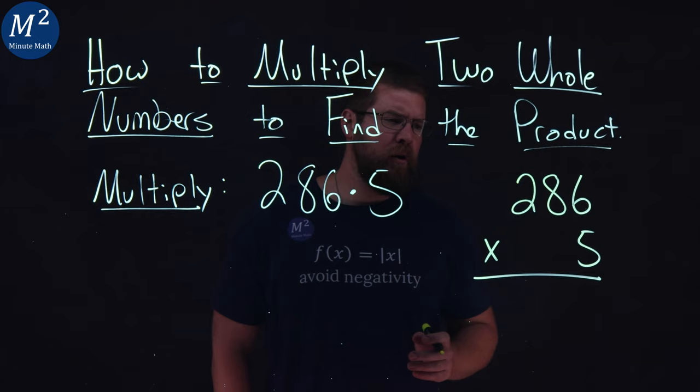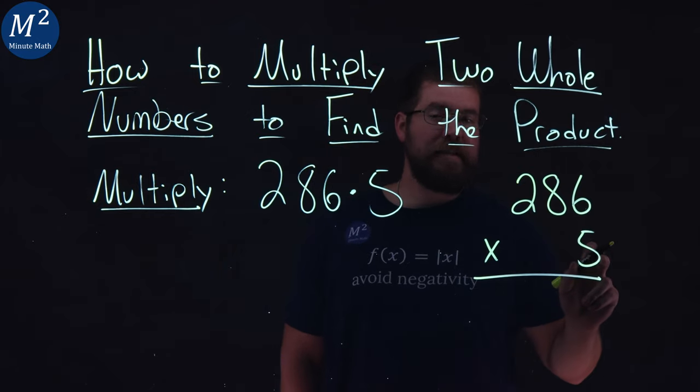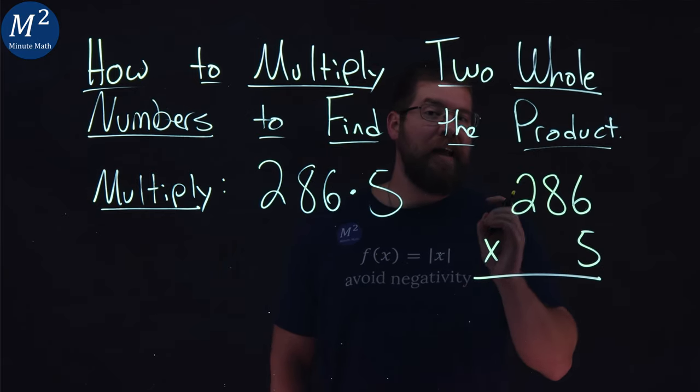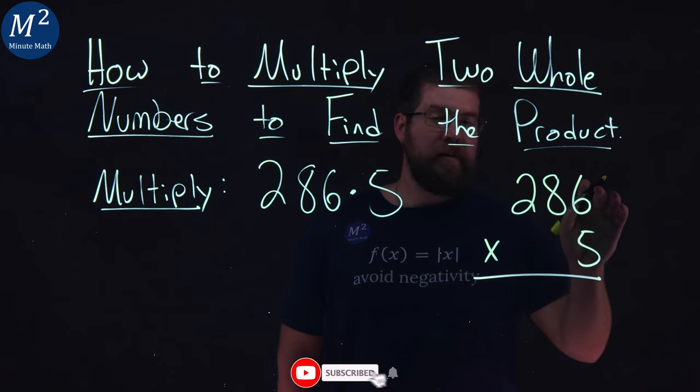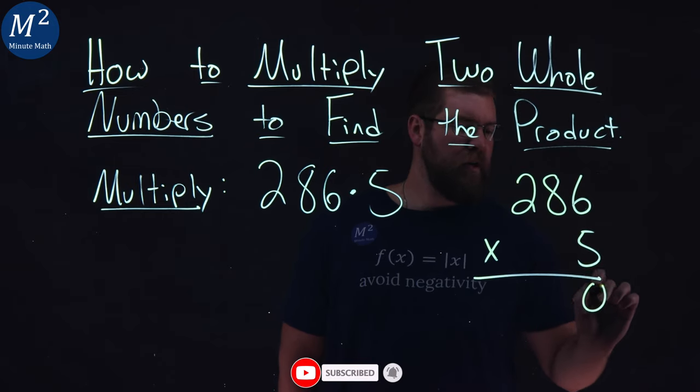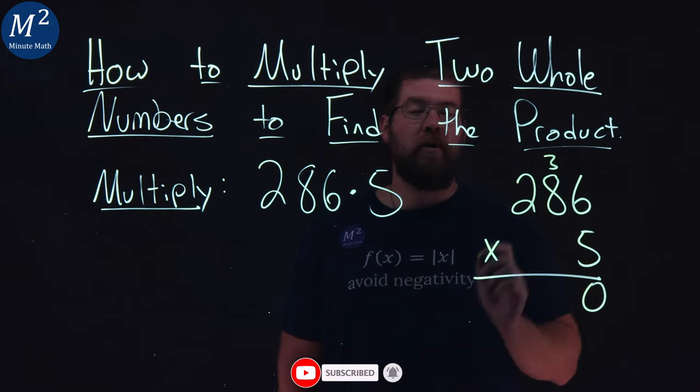Now, working through it, we have to do 5 times 6 first, and that gives me 30. So 5 times 6 being 30, I put a 0 here, and then I put a 3 carried over to the tens place.